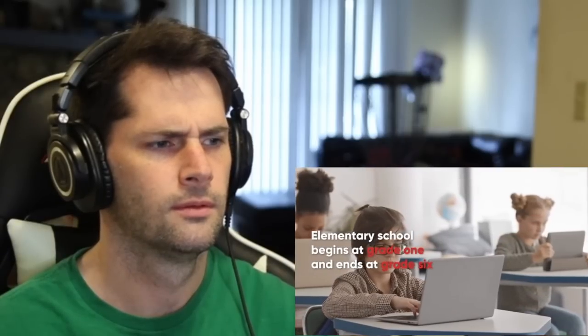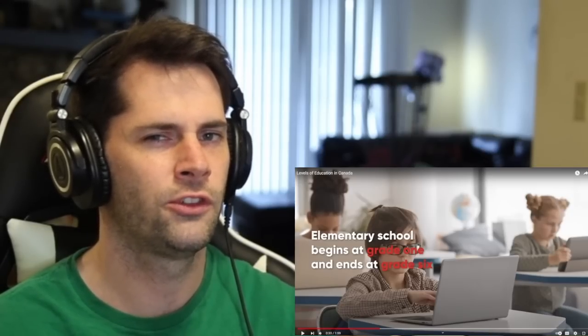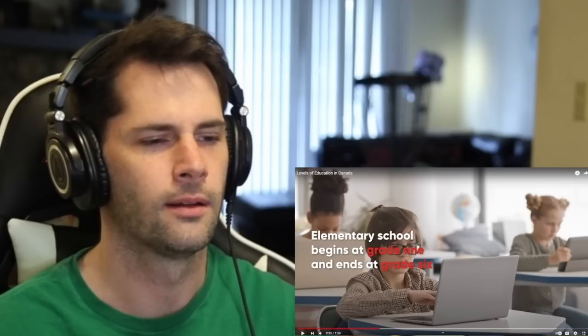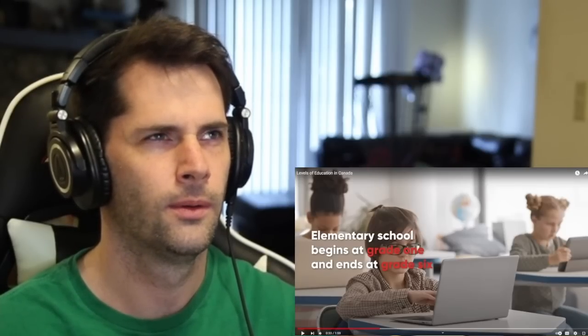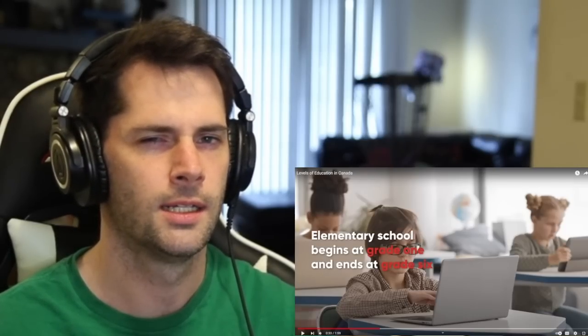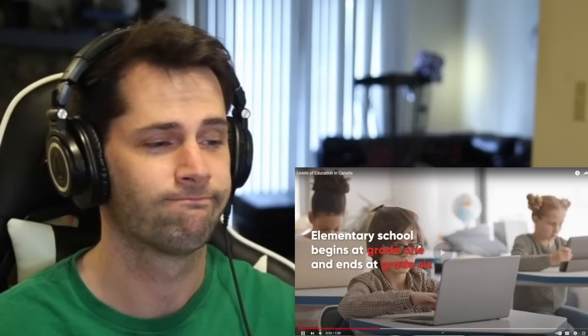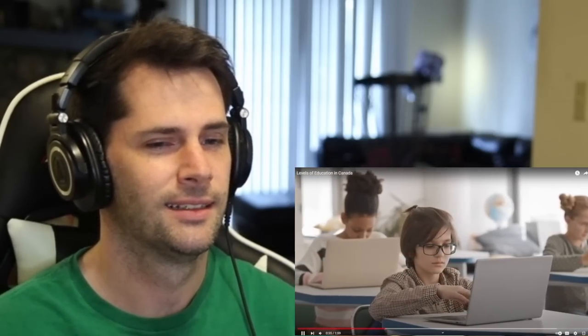But how does the Canadian education system work? Well, here's a breakdown of Canada's four levels of education for elementary school. Primary or elementary school begins at grade one and ends at grade six. Grade one. And like how we say first grade and sixth grade, grade one, grade six. Although in America, you'd say kindergarten to fifth grade. And in Canada, you say grade one to grade six. This is going to get very confusing to me.